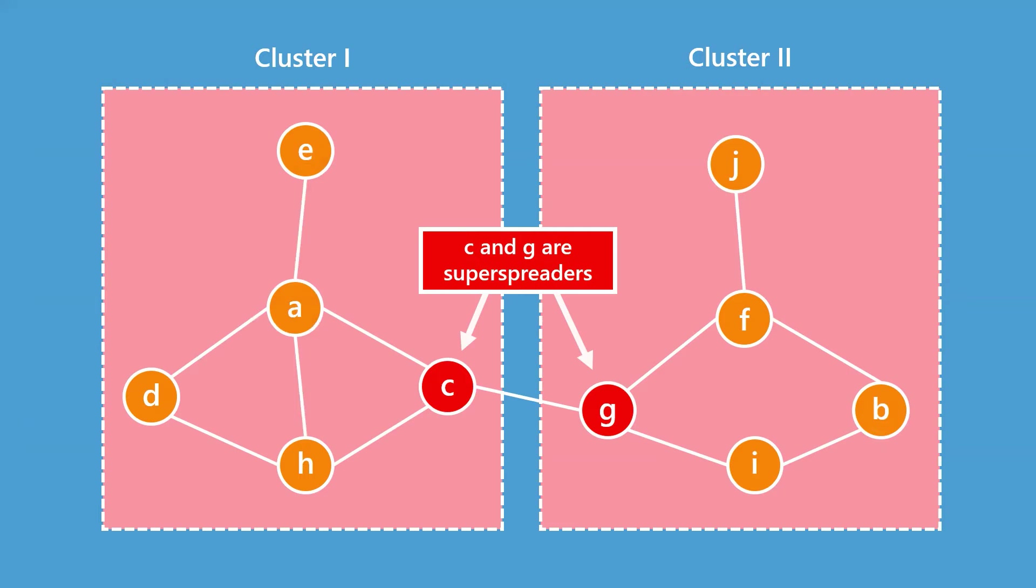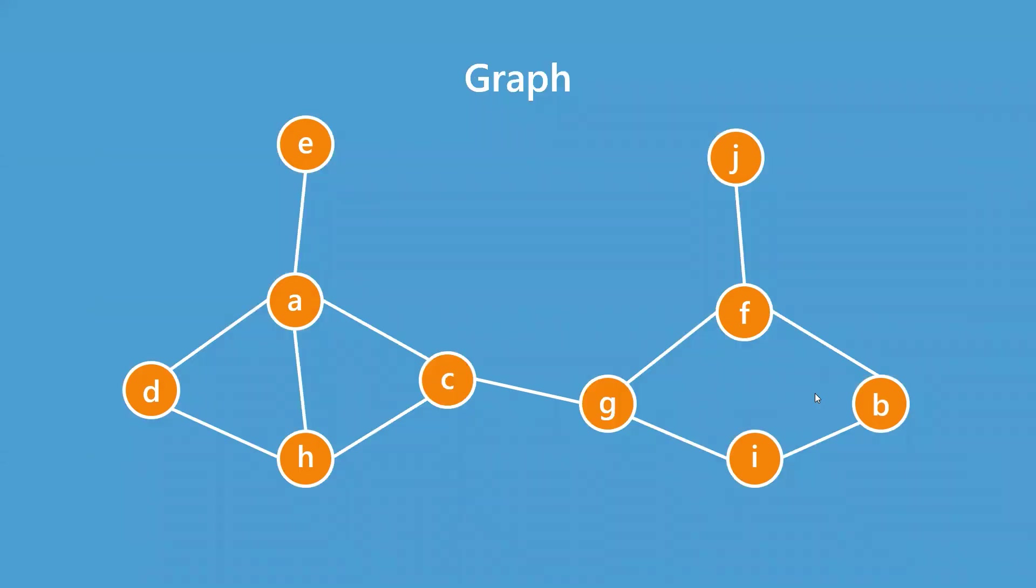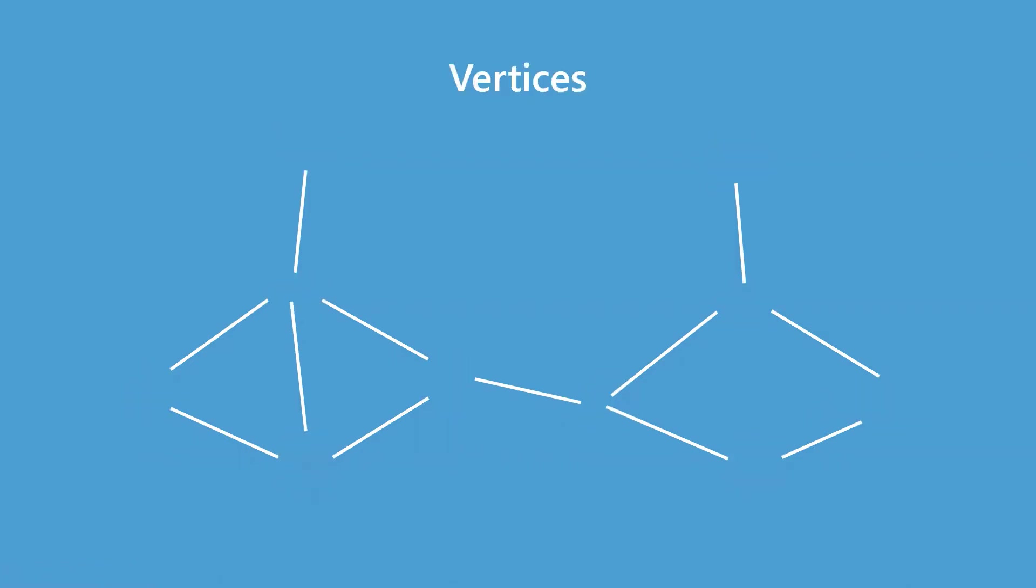Now how do we convince others that this is true? We need solid numbers. We can represent a network with a mathematical object called a graph. A graph is defined by its vertices.